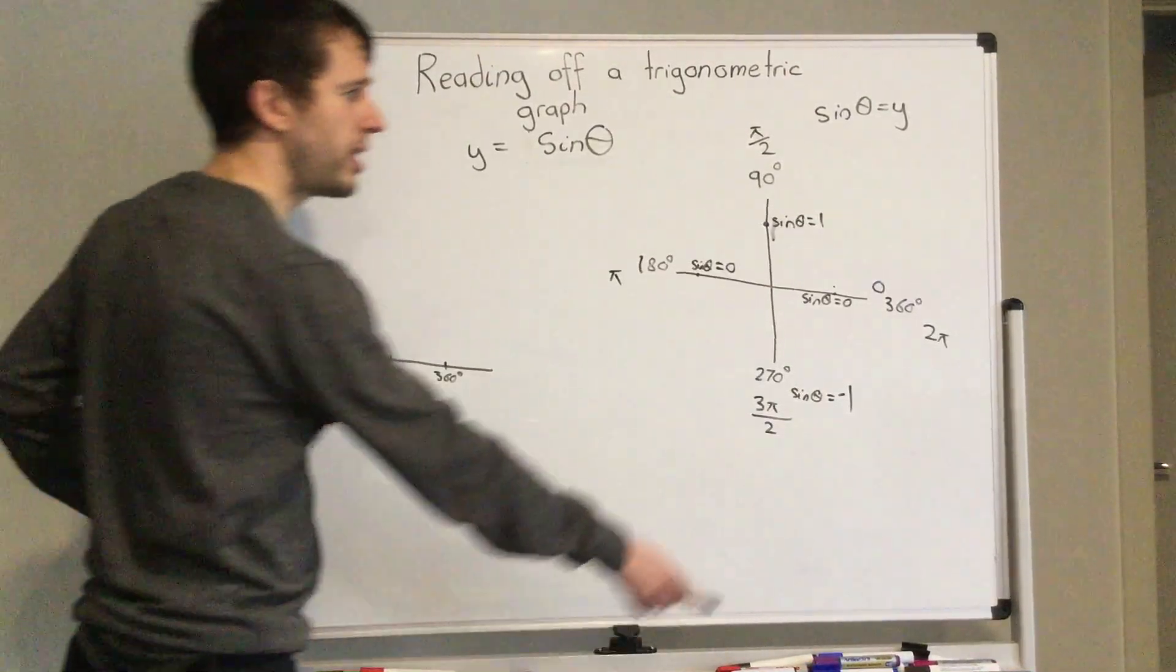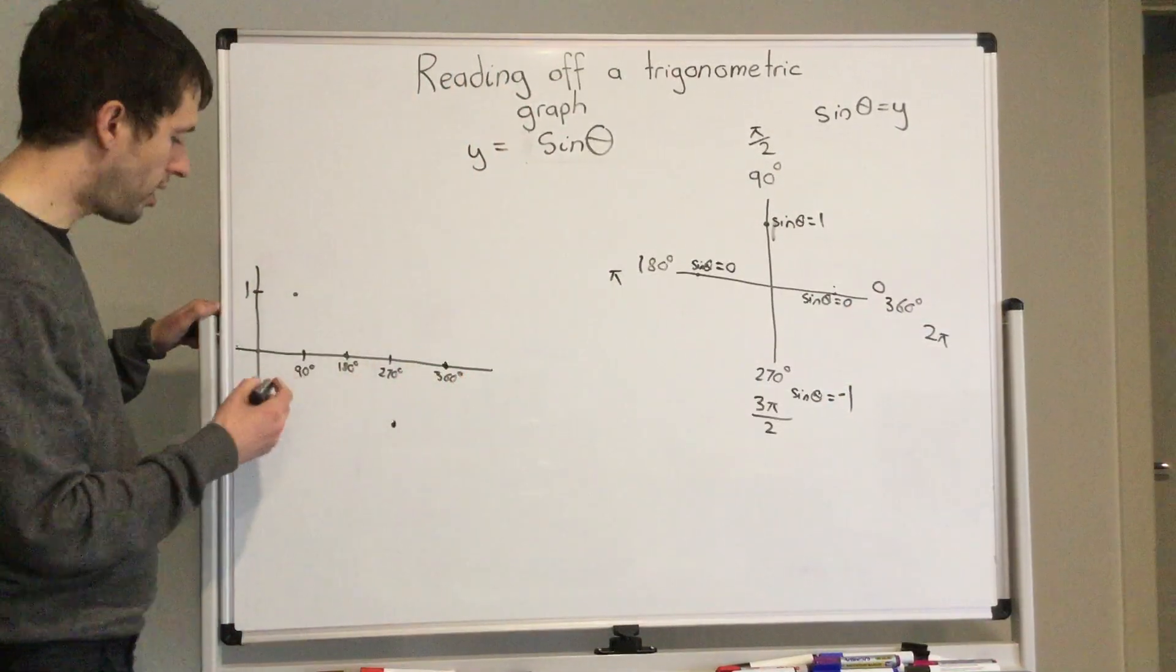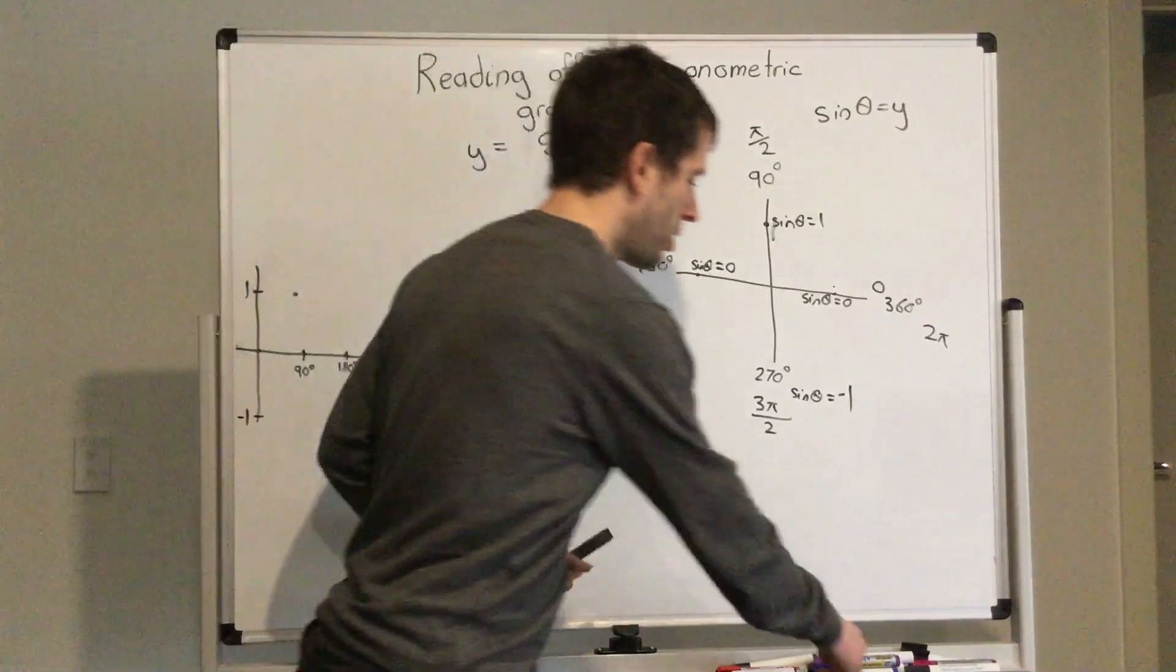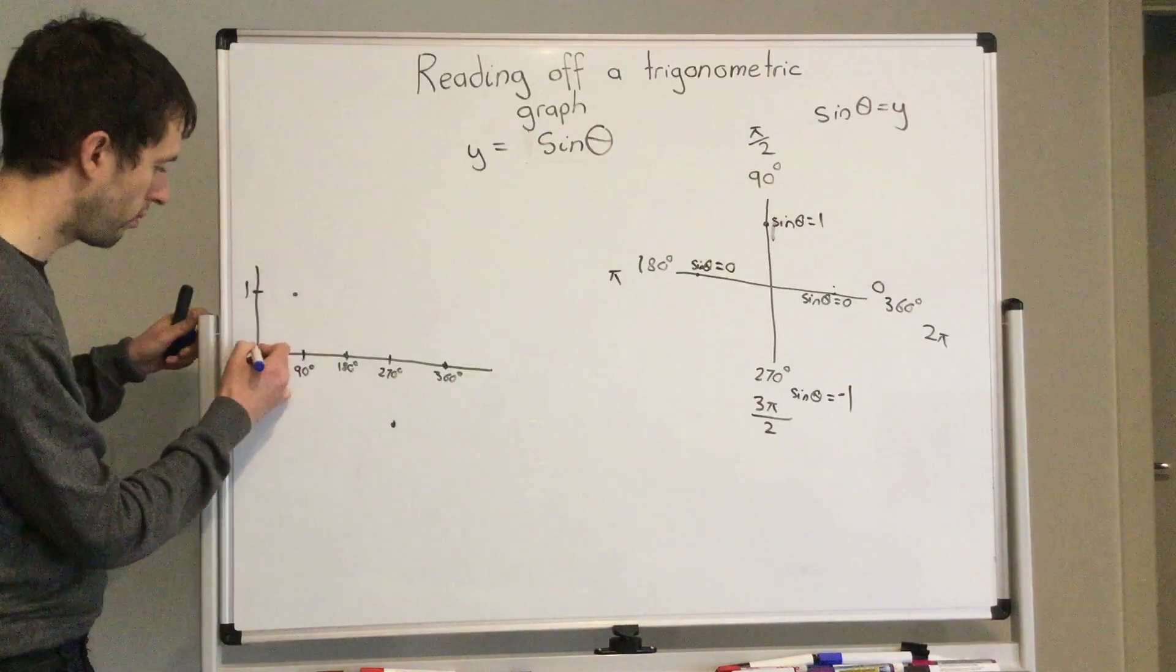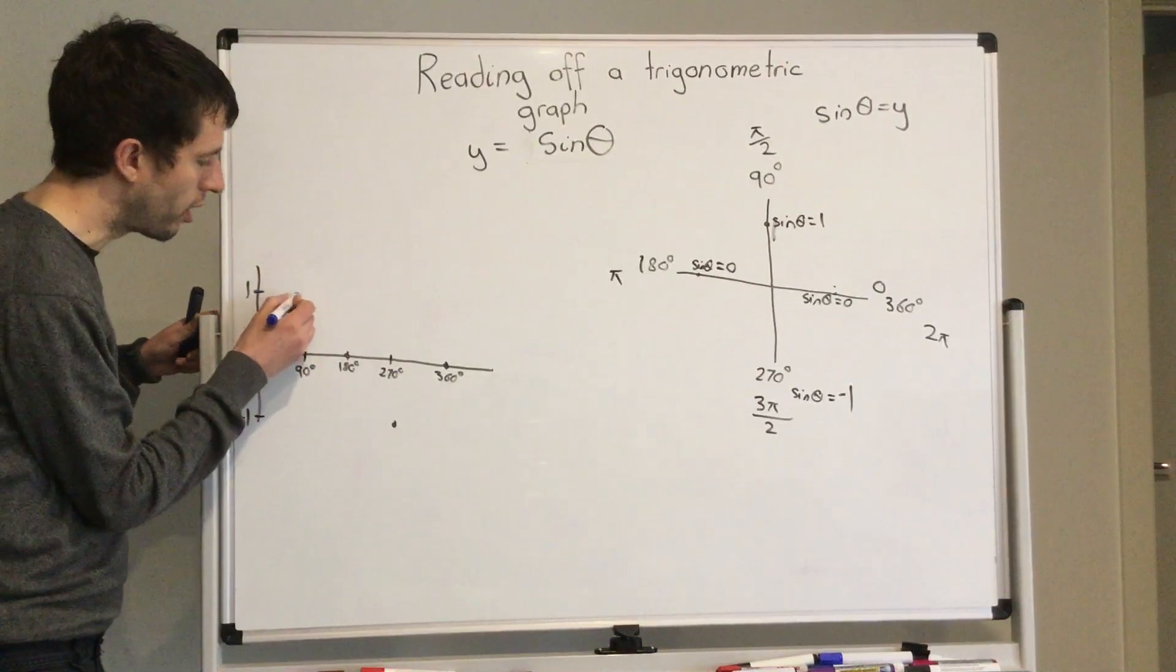At 360 degrees, our y-axis is at zero, so we are back at zero. So now I can draw my graph. I might change color so it's easy for you to see. So I'm going up, then I'm going back down.